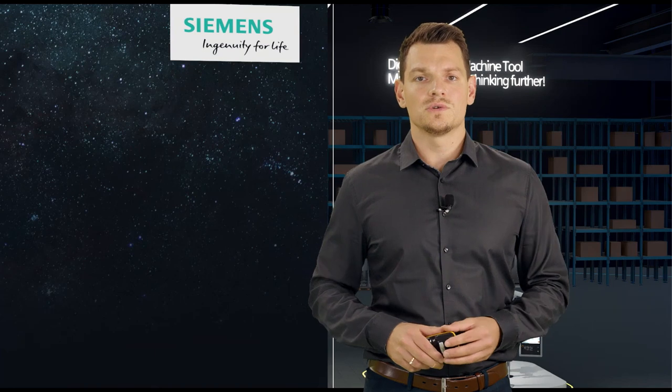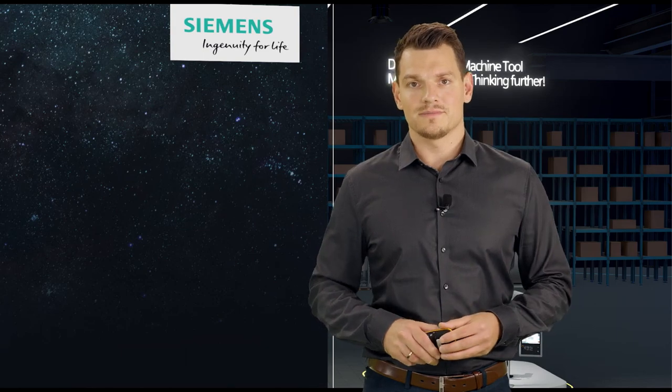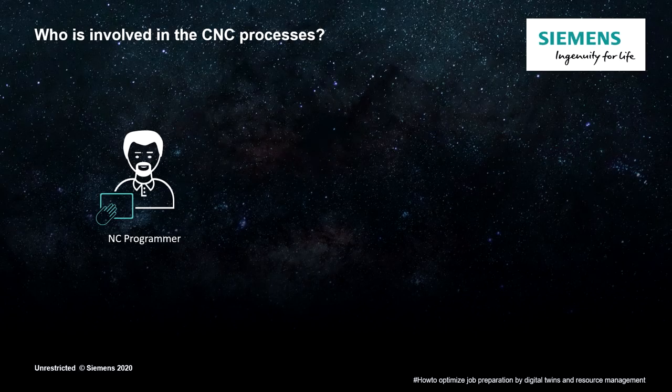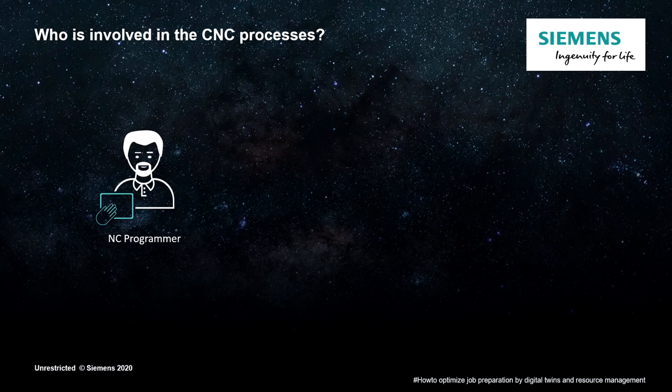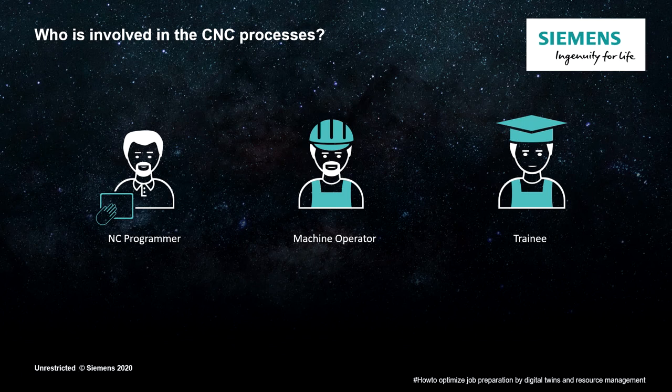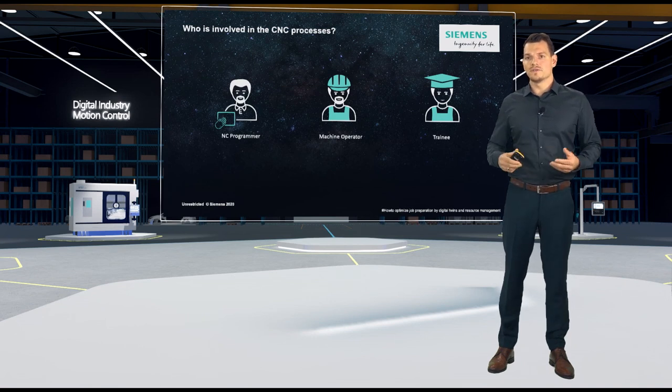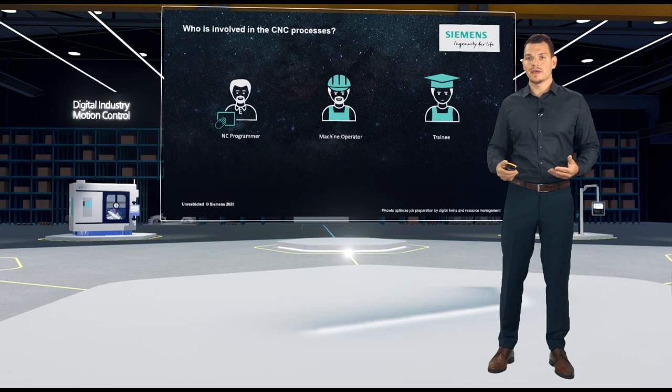First, we would like to introduce you three different parties in the CNC process that are involved in our examples. We have the NC programmer who creates and optimizes the part programs. The machine operator who prepares the clamping situation in the machining area, runs in the part program, and finally monitors the machining process. Often, the company trains its own skilled worker. A trainee must learn how to operate the machine, but what do they all have in common? Each of them wants to do their job as perfectly as possible.